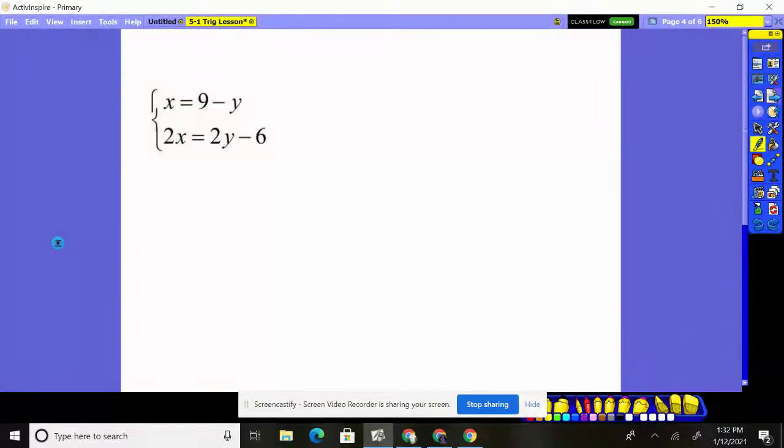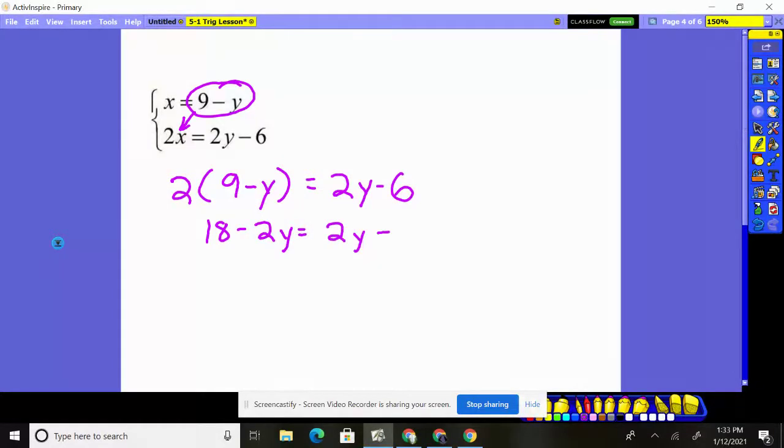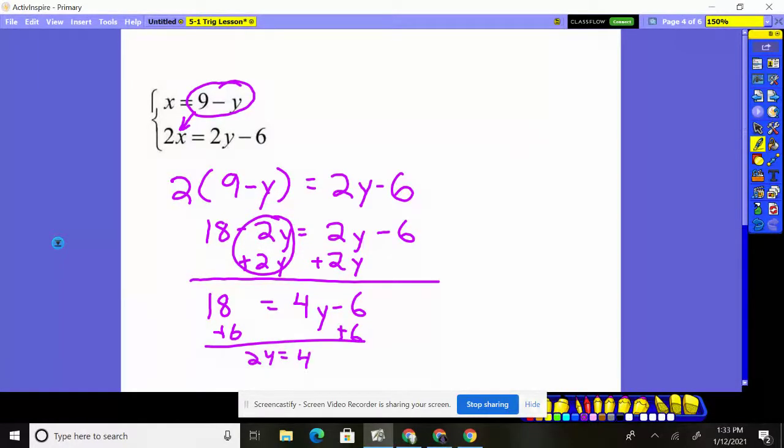Let's look at another example. Here it says x is equal to 9 minus y. As soon as it says x equals or y equals, I'm using that. I'm substituting that into the equation below. So I substitute it into that x right there. So we have 2 times x, which we know is worth 9 minus y. And that ends up equaling 2y minus 6. Distribute through 18 minus 2y equals 2y minus 6. Now what do we do? I'm going to put all my y's together. I'm going to move the smaller piece. So I'm going to move this guy over. You're used to moving things over to the left. Doesn't matter. If you want to do that, you can. This gives me 18. That goes away. 4y minus 6. Add 6. I get 24 is equal to 4y. Divide by 4.